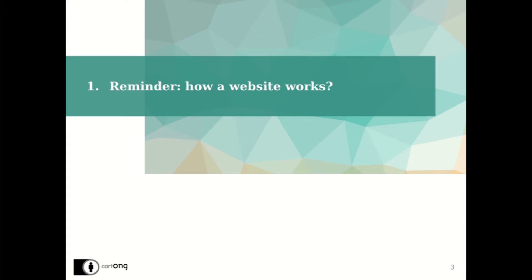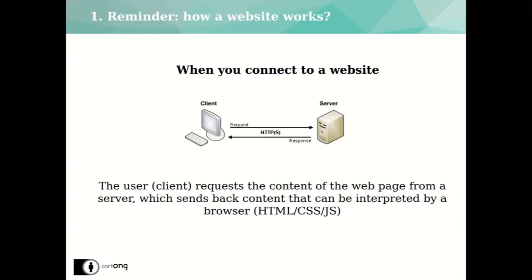So first of all, a little reminder of how a website works. When you connect to a website, the domain name — for example carto-ng.org — is associated with an IP address which corresponds to a server. A server is nothing more than a computer that is permanently on and on which programs are installed to generate websites. When a user, also called a client, wants to see the home page of the carto-ng site, he sends a request to the server, which sends back the page content in a format that can be interpreted by his browser.